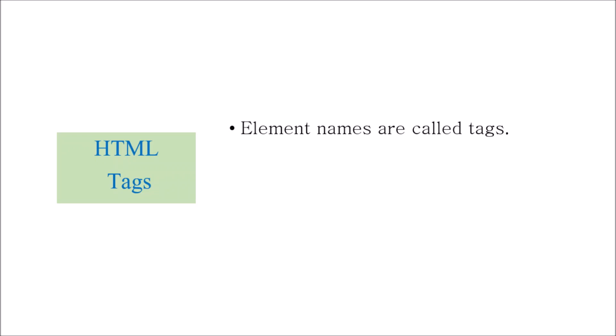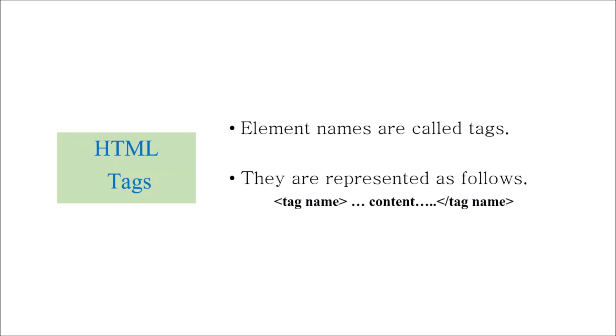HTML elements are called tags. They are represented as a tag name with an opening tag and a closing tag, and content is written in between. The opening tag has a less-than sign and tag name; the closing tag has a forward slash. Content must be written inside the opening and closing tags.